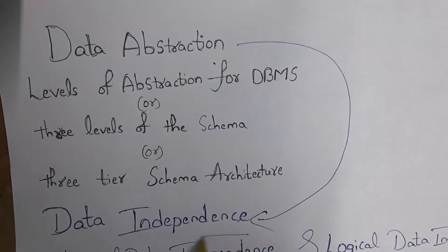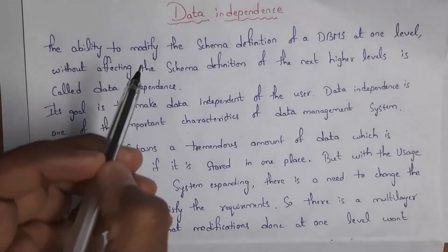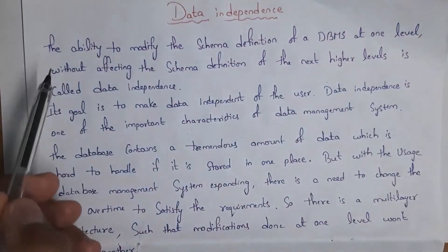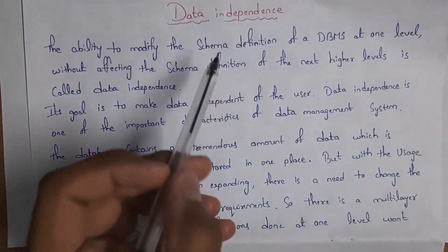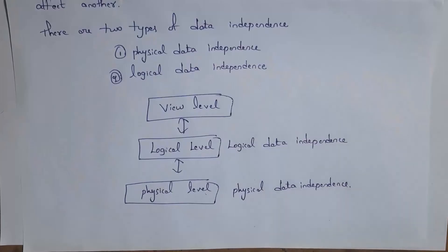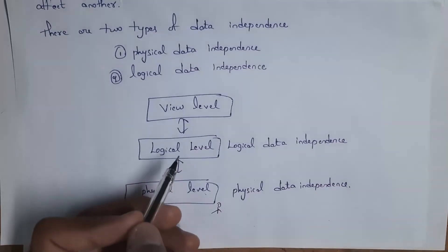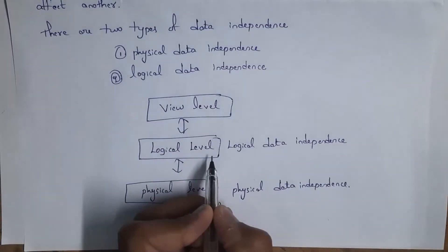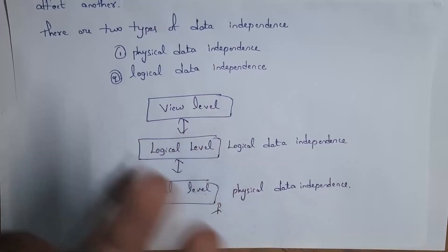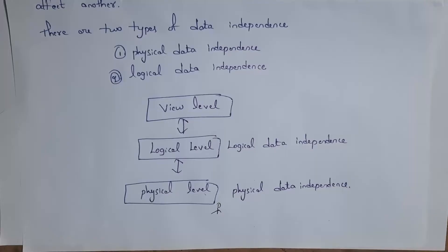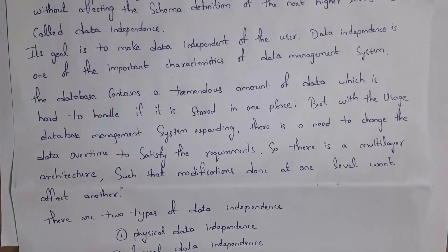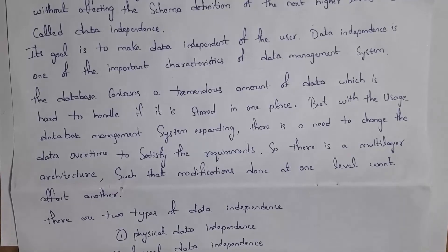By data abstraction, we can achieve data independency. Data independency means the ability to modify the schema definition of a DBMS at one level without affecting the schema definition at the next higher levels. Schema is nothing but the logical structure of the database. Modifications done at one level will not affect other levels. The main goal of data independency is to make data independent of the user — modifications done by one user at a particular level should not affect users at other levels. So data independency is one of the important characteristics in DBMS.